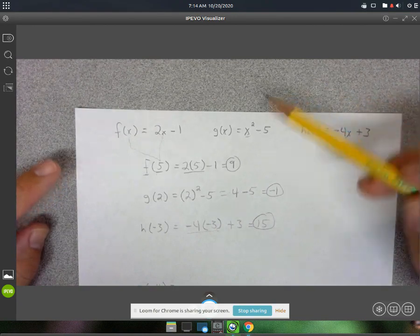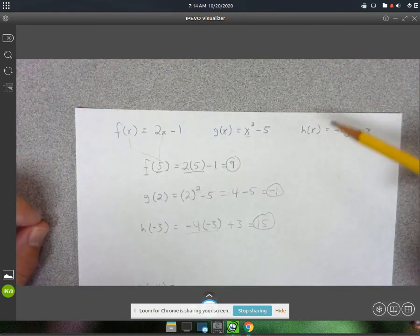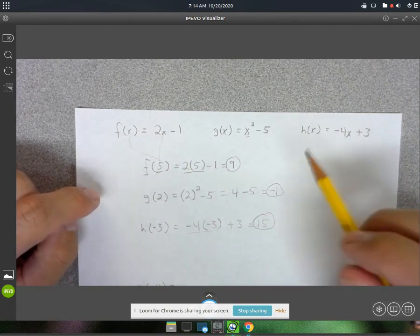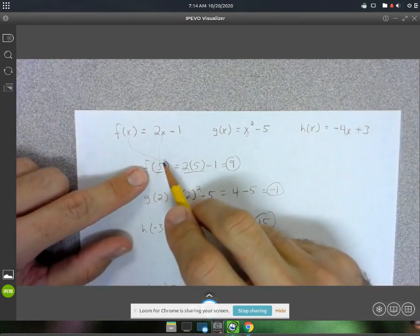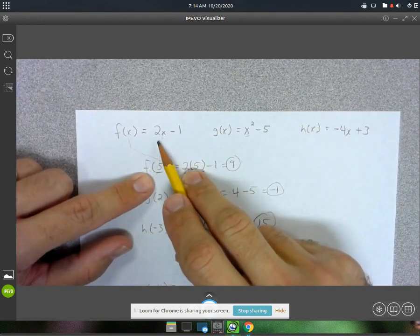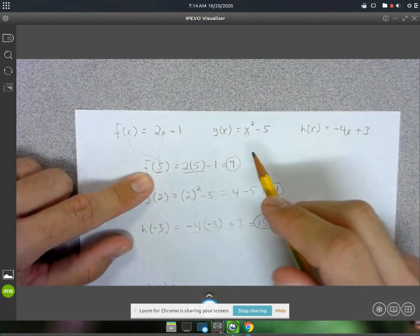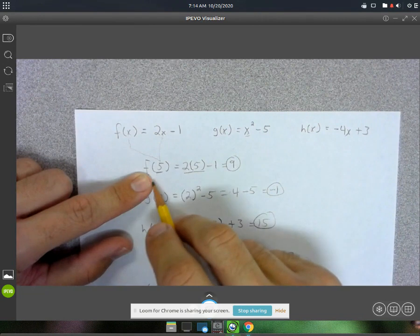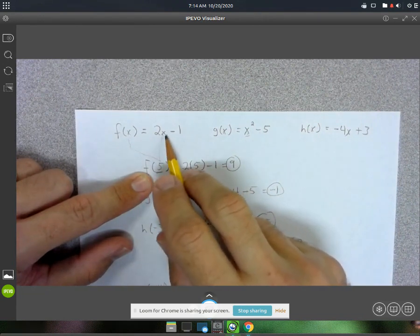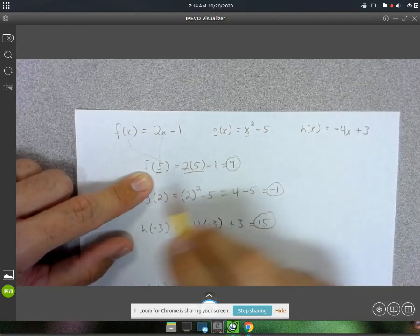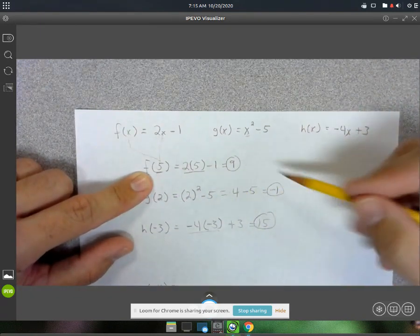Now the reason that these are functions is because every input goes to exactly one output. So like when we plugged in 5 for x, we got 9, and we will always get 9. There's never going to come a day where we plug in 5 for x here, and this doesn't work out to 9. Alright, so that input, or each input, is always going to give us one output.